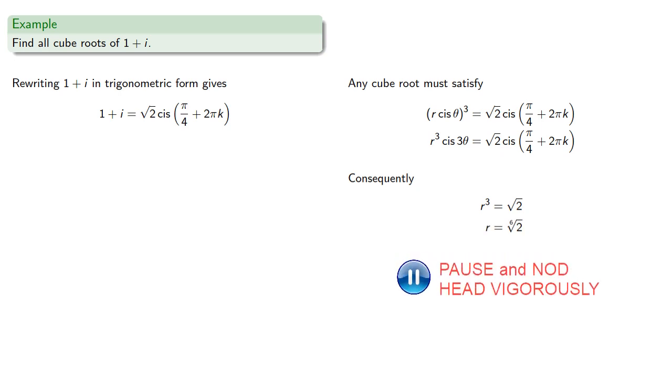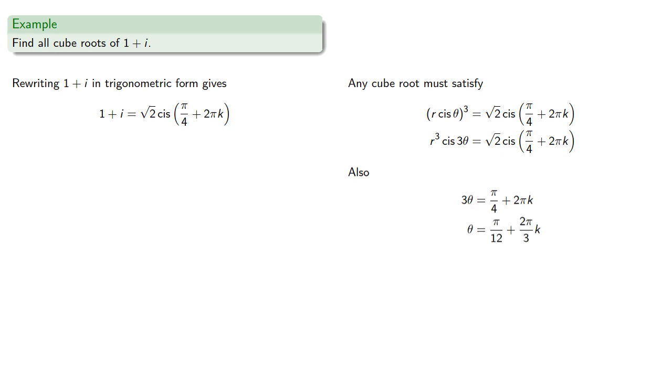and 3θ must be π/4 + 2πk, and so θ will be, with distinct values for k = 0, 1, and 2 giving us our arguments.